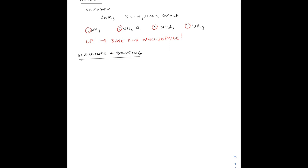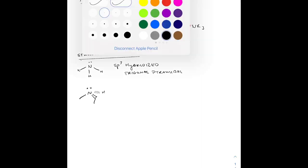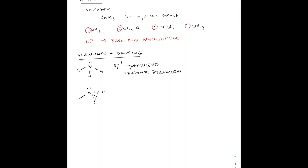This is going to help us dictate the chemistry of the nitrogen or amines. The general structure and bonding of an amine is that since it has that lone pair, it does have four different groups on it, and it is sp3 hybridized. It's also trigonal pyramidal in terms of molecular geometry. And since we can have potentially four different groups, it might seem like we can have chiral amines.